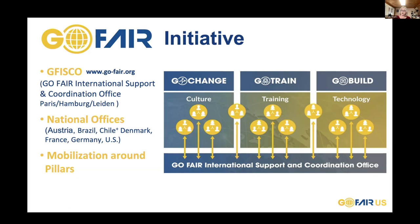The three pillars are Go Change, Go Train and Go Build. You'll notice a similarity to Brian's talk this morning about what's necessary for behavior change and instantiating it, where he said achieving the mission of open science requires culture change in the incentives that drive researchers' behavior, the infrastructure that supports research, and the business models that dominate scholarly communication. Through these three pillars, GO FAIR fosters concerted verification efforts and helps avoid silo formation, undue competition and fragmentation.